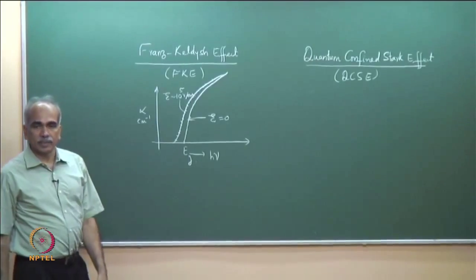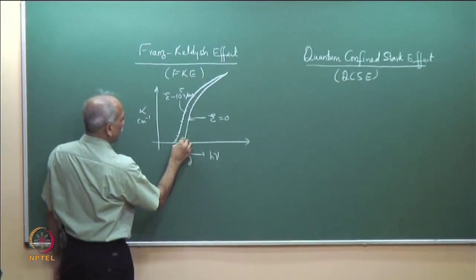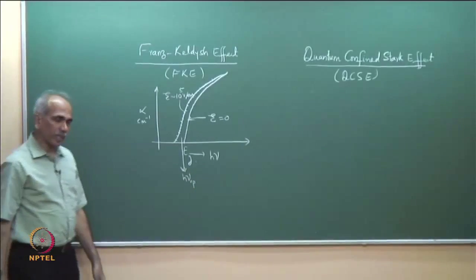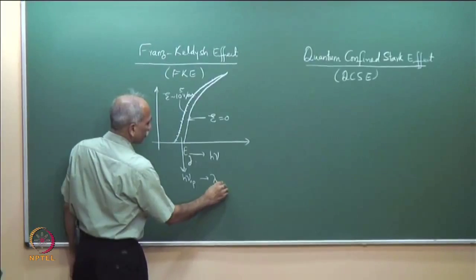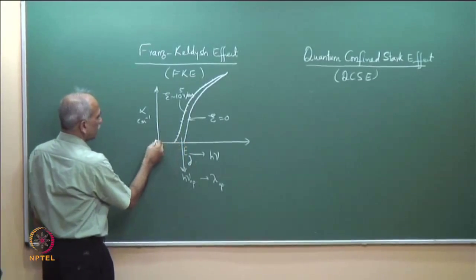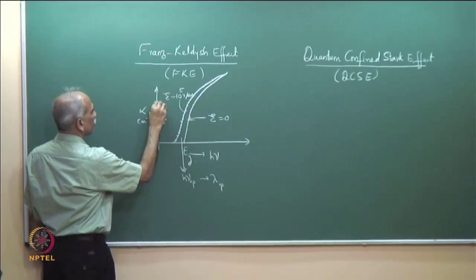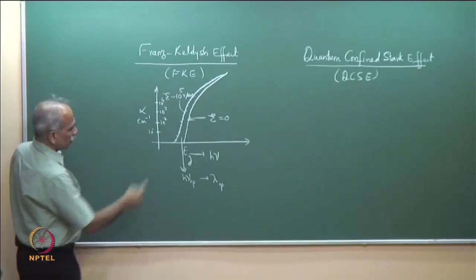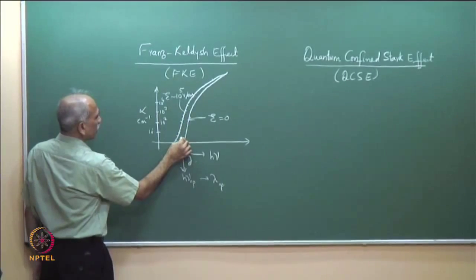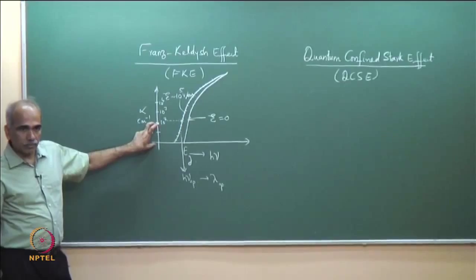That is 100 kV per centimeter. If you use an operating wavelength h-nu_op such that in the absence of the electric field the absorption is very little — say 10^1, 10^2, 10^3, 10^4 centimeter inverse — but in the presence of an electric field you have an absorption coefficient which is significantly larger. This is the Franz-Keldysh effect.